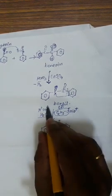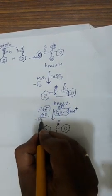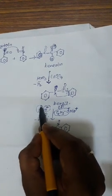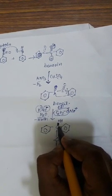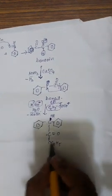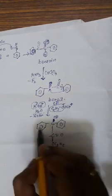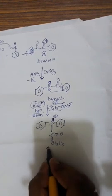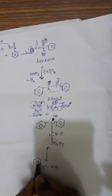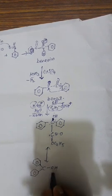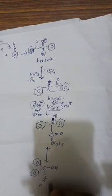Na⁺ combines with OH⁻ from water to form NaOH, which is removed. The remaining hydrogen from water attaches to the carbonyl oxygen, converting C=O into C-OH (a hydroxyl group). The resulting molecule can be written as having a C-OH group, two phenyl groups on the same carbon, and a ketone ester group (-COC₂H₅) — this is the benzilic acid ethyl ester rearrangement product.